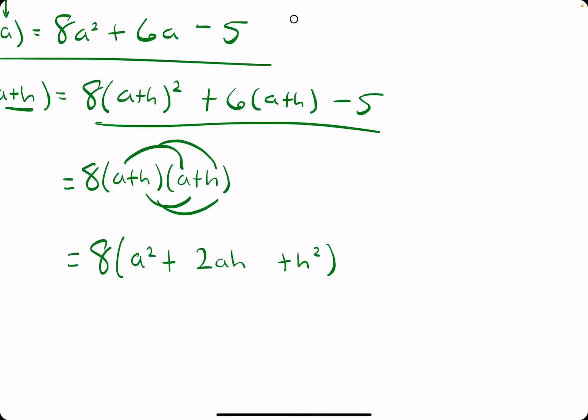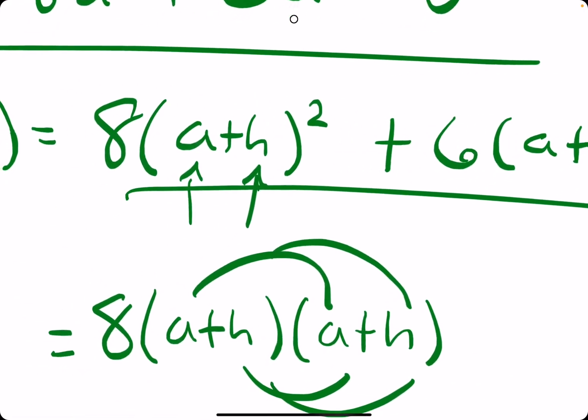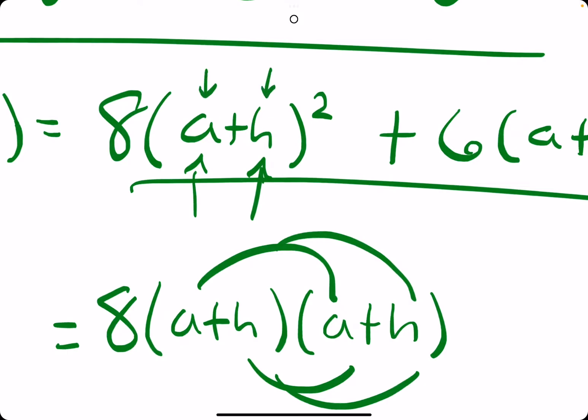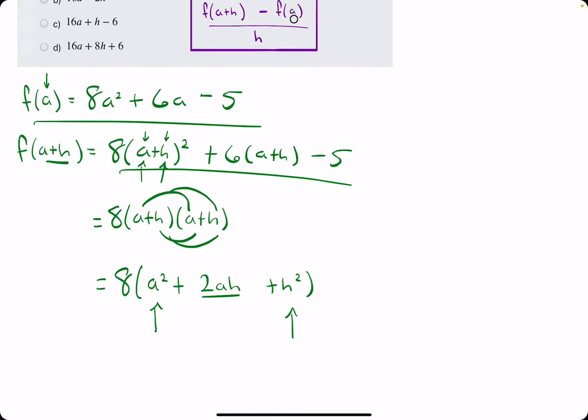Alright, so this is what we should see when we square a plus h in this case. And so, maybe a nice trick to remember is, it's always the first term squared, so a². It's always the last term squared, so h². And then it's always the two terms, so a times h times two. So, two ah. Alright, let's keep going.